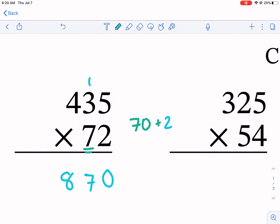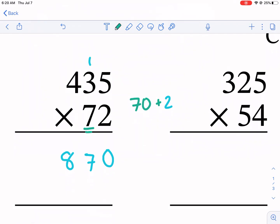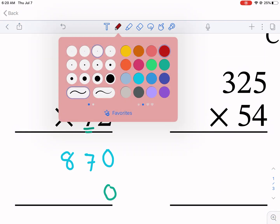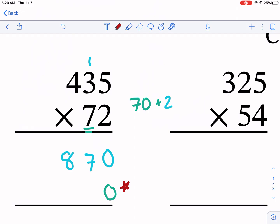70 technically has a zero at the end of it, so what we're going to do here is anytime you move on to the tens place, we're going to make another zero right there before we start multiplying. Make sure to add that zero - that is a crucial step that a lot of people forget.